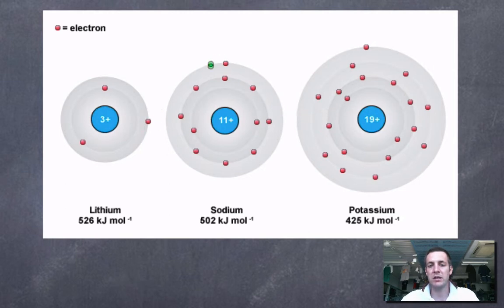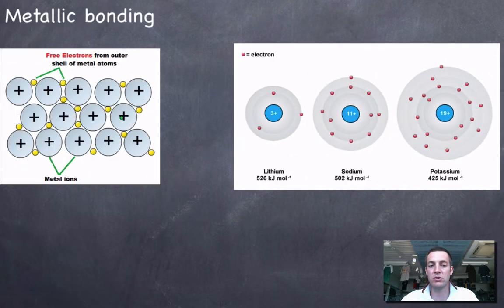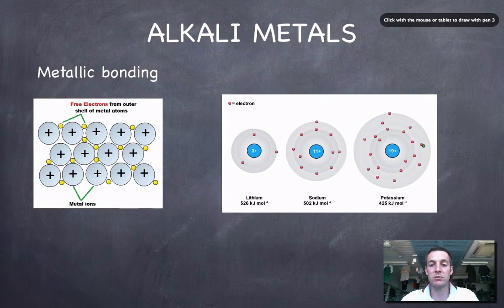So they've all got the same core charge, but because the number of shells is increasing down this group, this outermost electron is getting further and further from the nucleus. So if the effective nuclear charge or the core charge is staying the same, but the distance between these ions and the electrons or the nuclei and the electrons is getting greater and greater, then we ought to expect the metallic bond to be getting weaker and weaker the bigger the atom becomes. In other words, for the metallic bond to be weakening as we go down the group. If the metallic bond gets weaker, then we should expect the melting point to fall as we go down the group, and indeed we do. We start off with lithium, which is quite a hard metal, and end up with cesium, which is actually a liquid at room temperature.